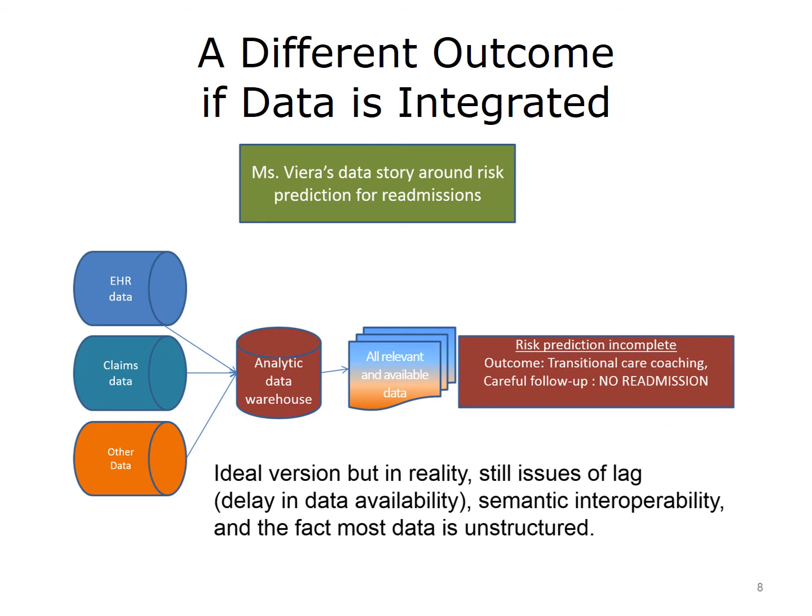This is an ideal version. In the real world, there are still many issues to be dealt with. For instance, claims data often takes a long time to be available, sometimes more than a year. Quicker access to the information is needed in many cases, and so communities may exchange information electronically. Similarly, data that means the same thing is not stored in the same way across settings. We must strive for semantic interoperability, where we can recognize when things mean the same thing. Finally, most data is stored as unstructured notes or reports, which makes it difficult to predict issues.